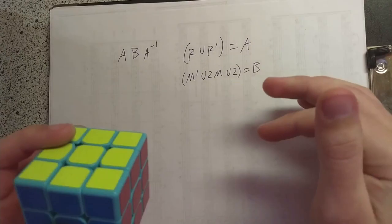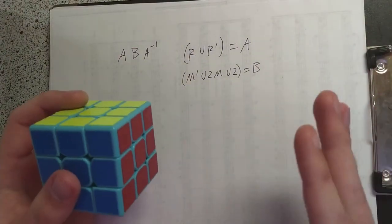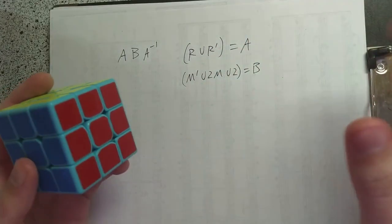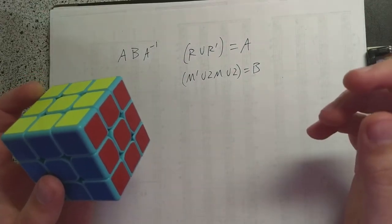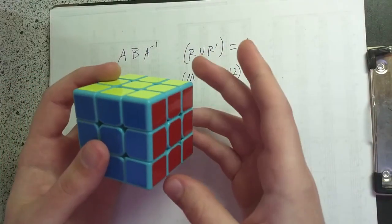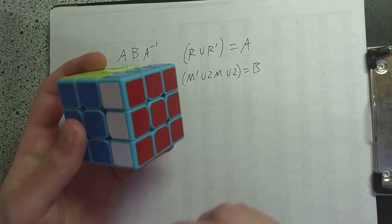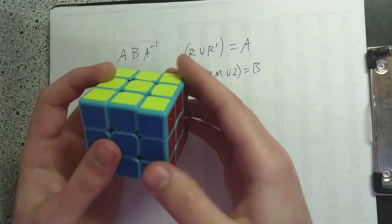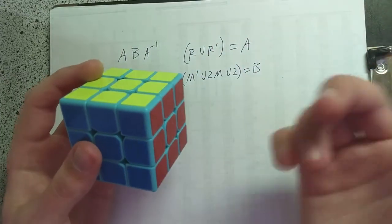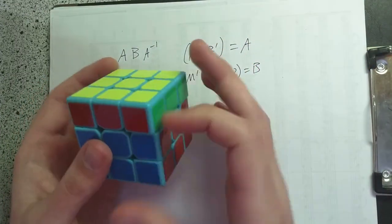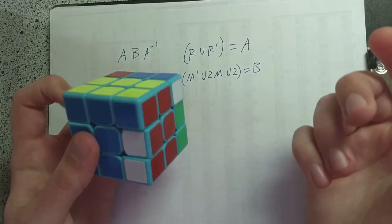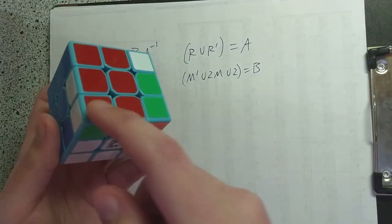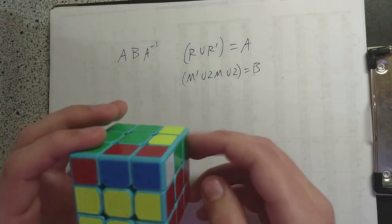The first thing to notice is that if you have some algorithm that does some permutation, any conjugate of that algorithm is going to have the same cycle structure as the original algorithm. For example, if we do just a single R move, we know already that this has a four-cycle of corners and a four-cycle of edges. But if we conjugate it with something — say U is our conjugate — we do U, R, and then the inverse of U, we're going to have a four-cycle of edges again and a four-cycle of corners.